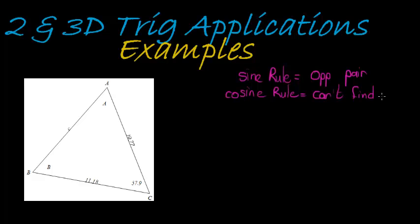If I can't find an opposite pair, then I'll use the cosine rule. Let's see for an opposite pair - we mean an angle and its opposite side. Let's look at what we have. We have one angle here - do we have its opposite side? No. Do we have another angle? No, we don't have another angle.